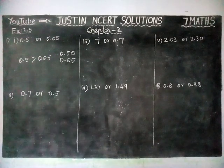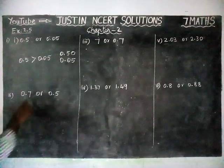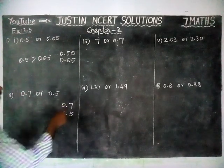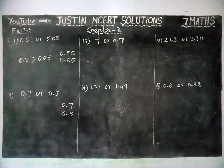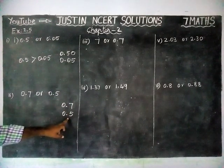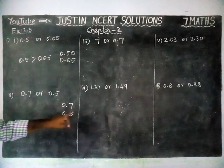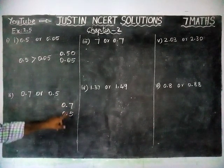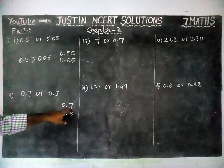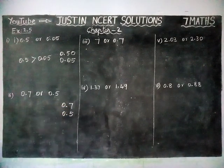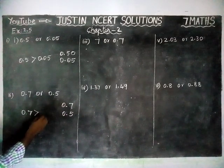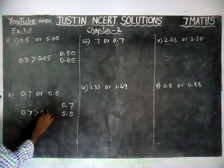Second question: 0.7 and 0.5. Here we have only one decimal digit each. The first digit of 0.7 is 7 and of 0.5 is 5. Since 7 is the greatest, 0.7 is greater than 0.5.